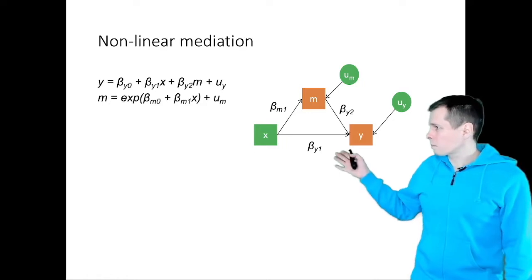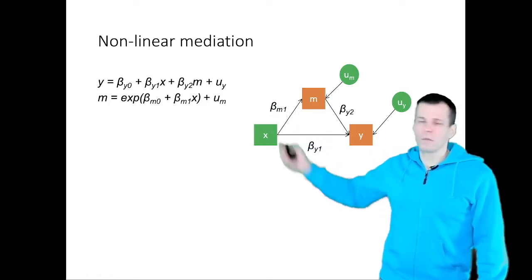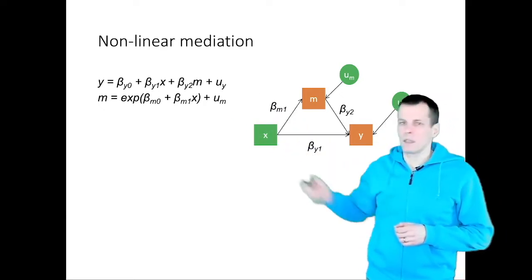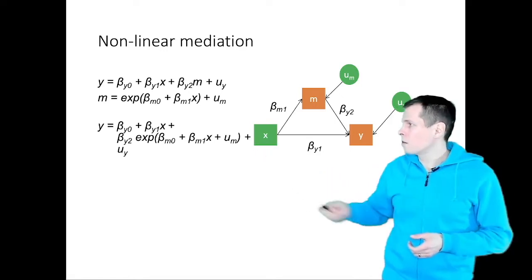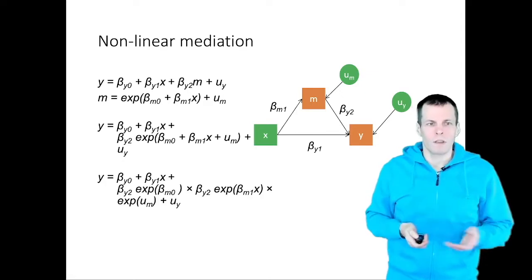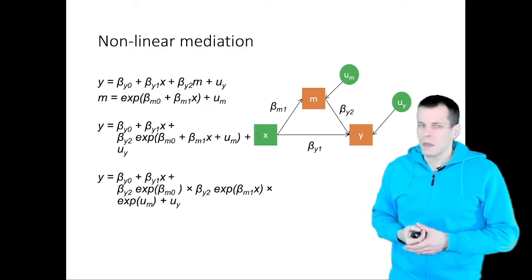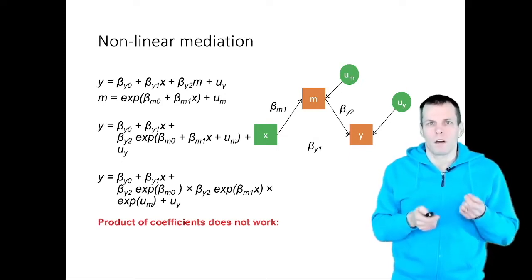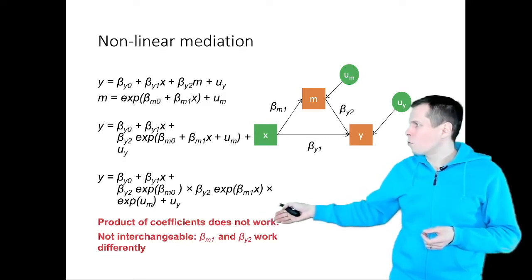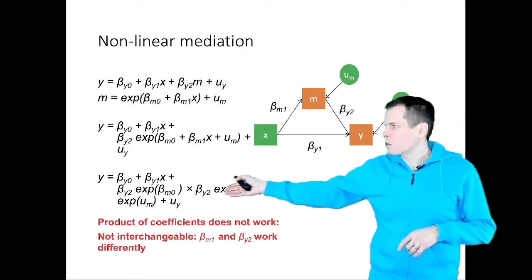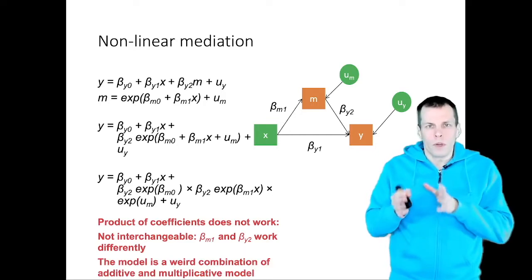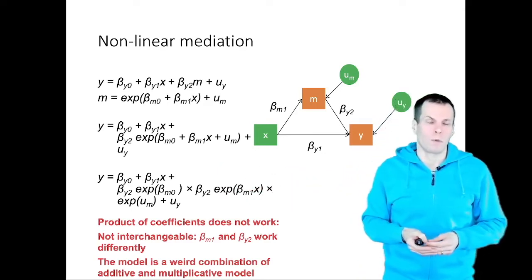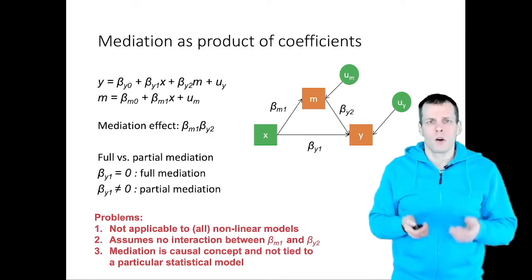Let's take another example. We have a linear outcome model again, but now we have an exponential model for the mediator — like Poisson regression for the mediator. We take the equation for y, plug in the equation for m, and when we try to multiply to remove the parentheses, we get a very messy equation. In this case the product of coefficients does not work, because beta_m1 and beta_y2 work differently — beta_m1 is in the exponent, beta_y2 is not. The model becomes a weird combination of additive models that is very difficult to interpret.